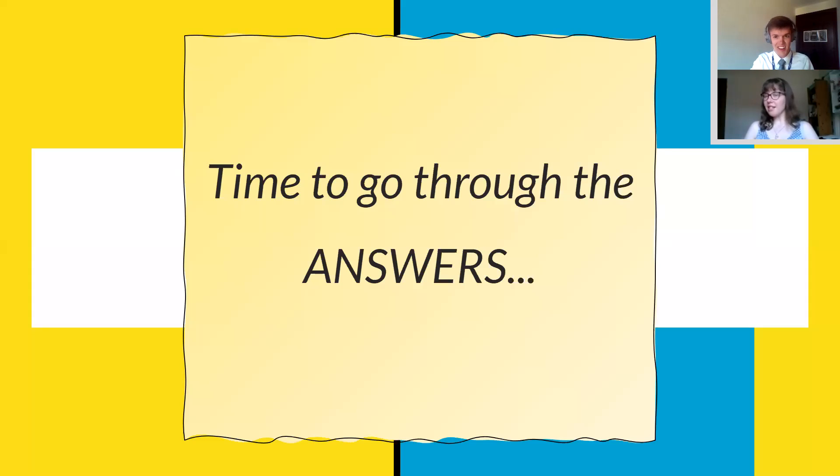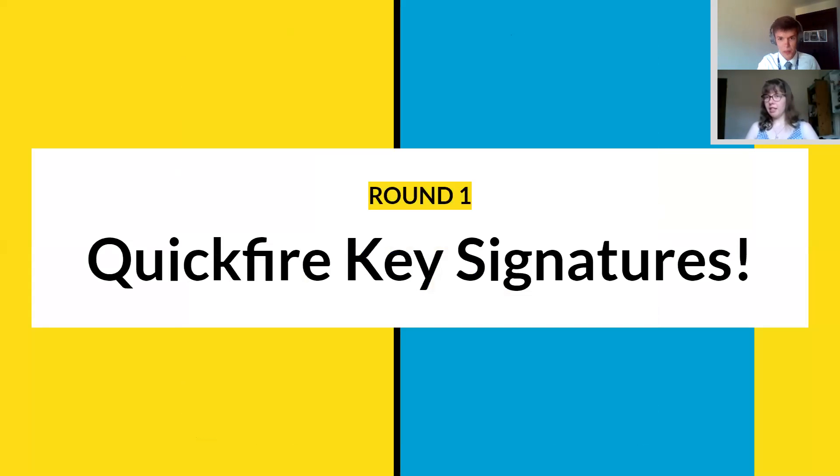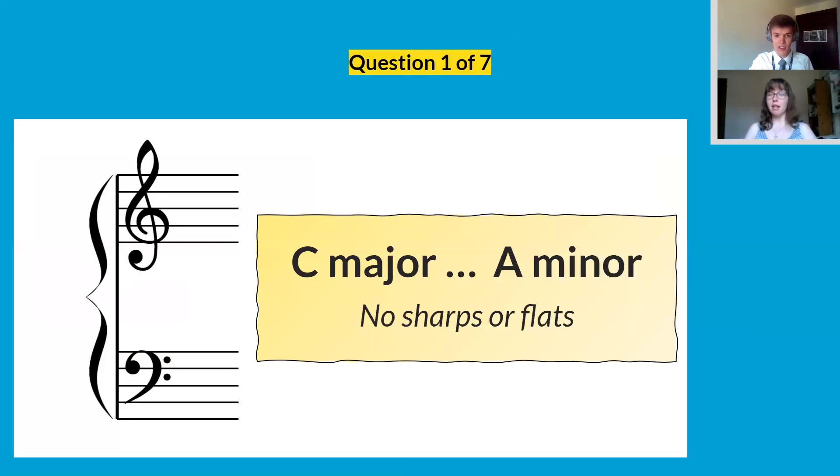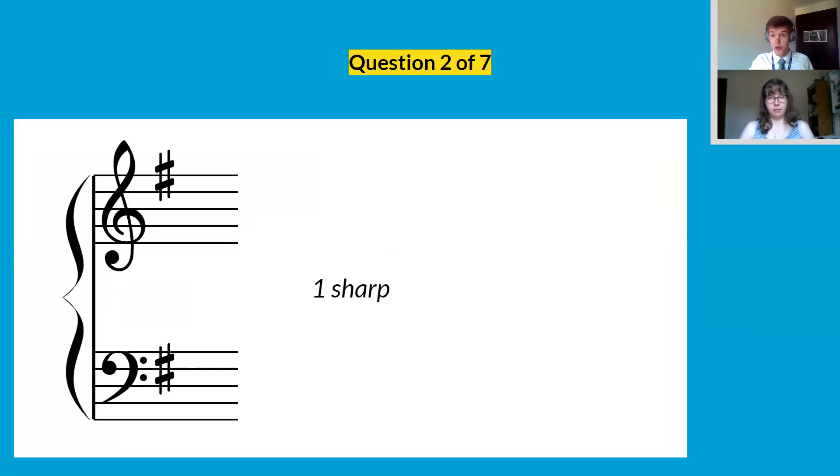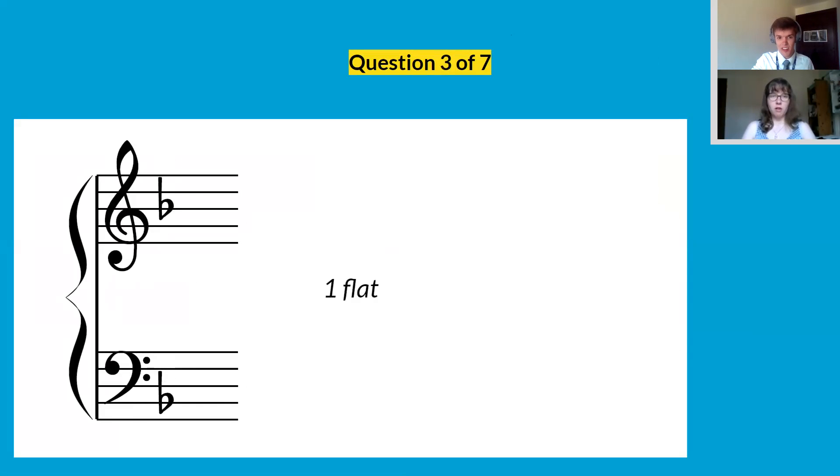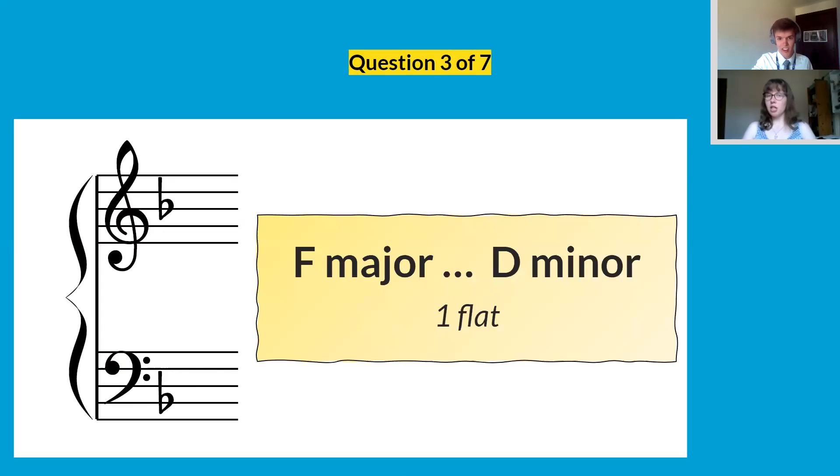So now we're going to go through the answers for all of those questions. So go back and find your answers and we're going to go through them right now really quickly. So for the first round key signatures question one was no sharps or flats. That is of course C major and A minor. So two points per question for this. Question number two is G major and E minor. Question three was one flat. So that is F major and D minor. So remember our relative minors are a third below our majors.